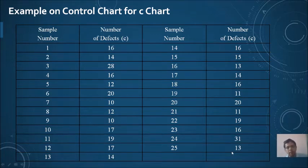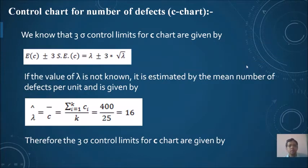Using this value, we are going to first construct the control limit. We know that the three sigma control limits for c chart, that is number of defects, are given by lambda plus minus 3 times square root of lambda. If the value of lambda is not known, it is estimated by the mean number of defects per unit.